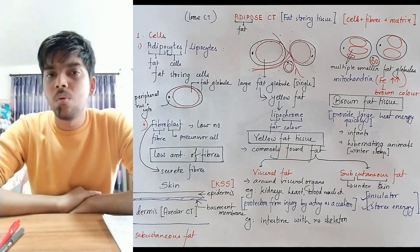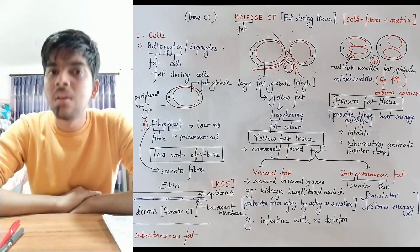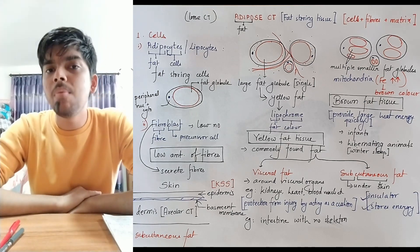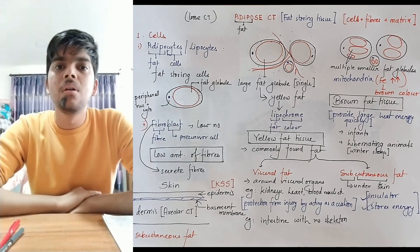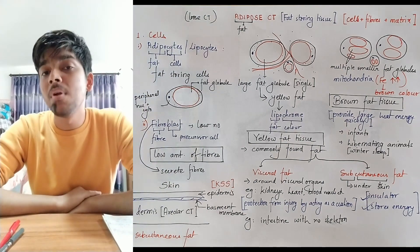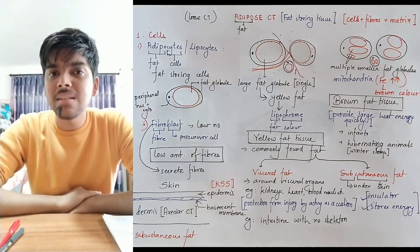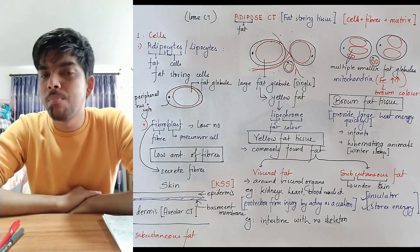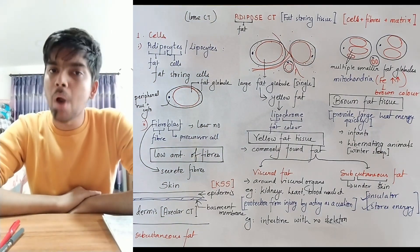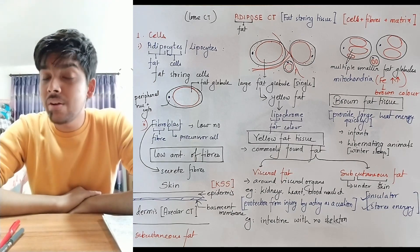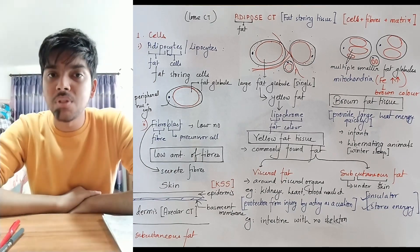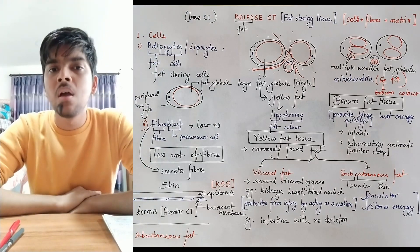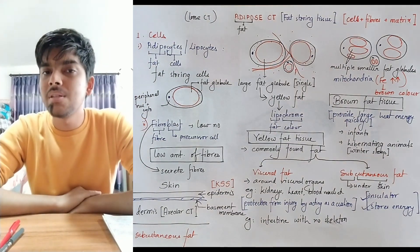The second type of fat has large spherical cells with multiple fat globules instead of a single large one. Along with multiple fat globules, the cells have mitochondria rich in iron cytochrome pigments which impart brown color. Due to this brown color, it is known as brown adipose tissue. It is commonly found in infants and hibernating animals because it provides large amounts of heat energy quickly.